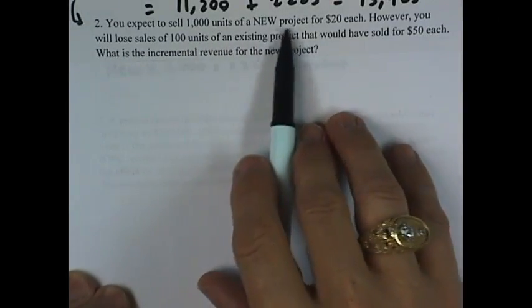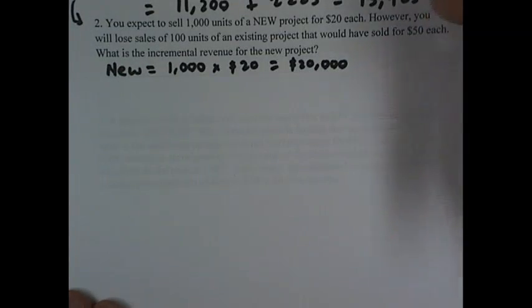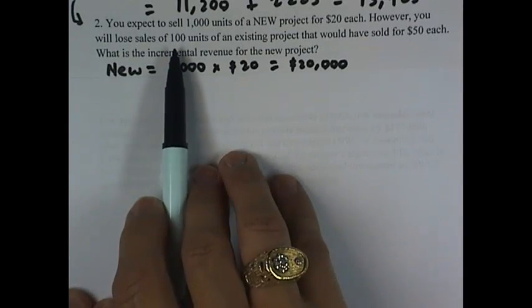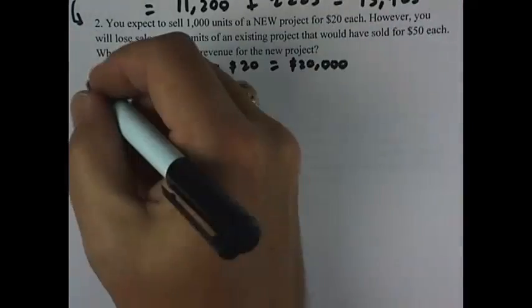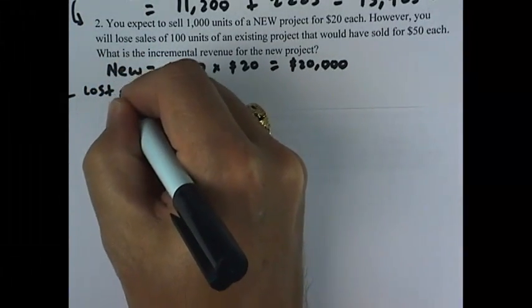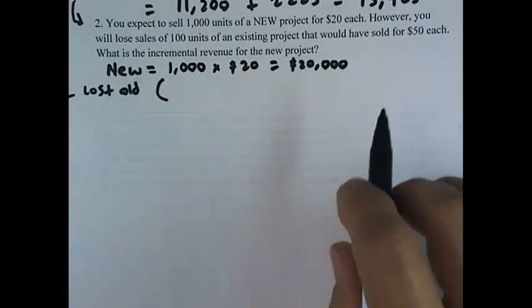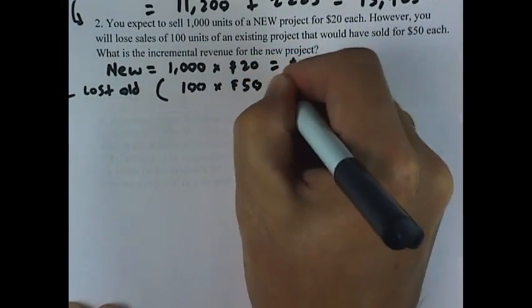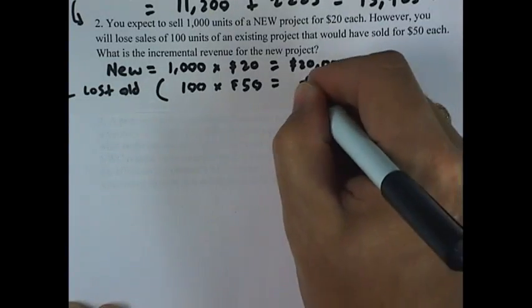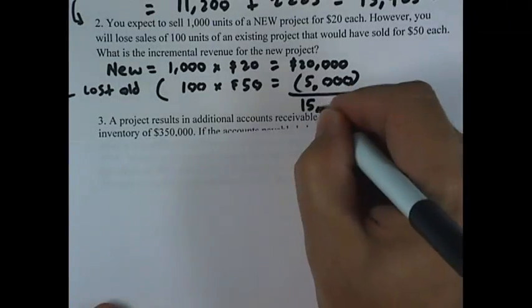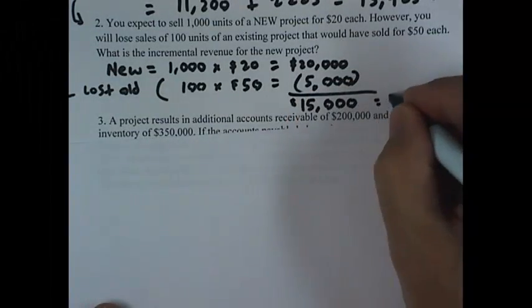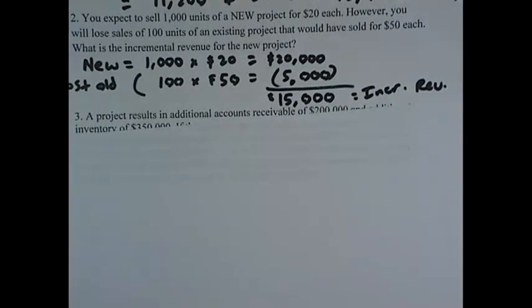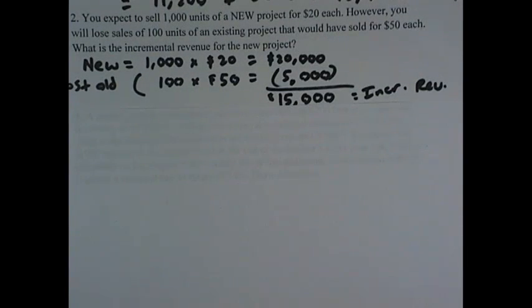Problem two says we expect to sell 1,000 units of a new project for $20 each, so we might think there's $20,000 in incremental revenue. However, firm-wide additional revenue is what really matters. We're going to lose 100 units at $50 apiece from the old project, so that's $5,000 in revenue that will come off the $20,000. Our firm-wide net additional revenue is $15,000 in incremental revenue that this new project will get credit for.